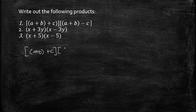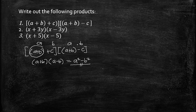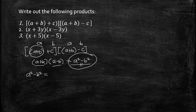This is in the form of (a + b)(a − b) = a² − b². Here, our 'a' is (a + b) and our 'b' is c. So the special product is (a + b)² − c².